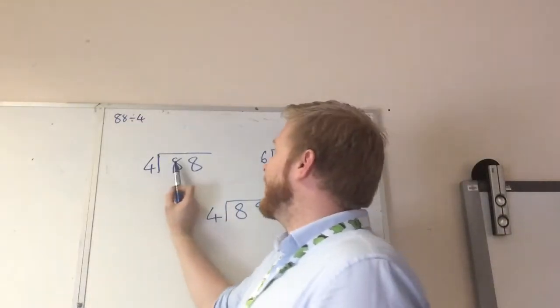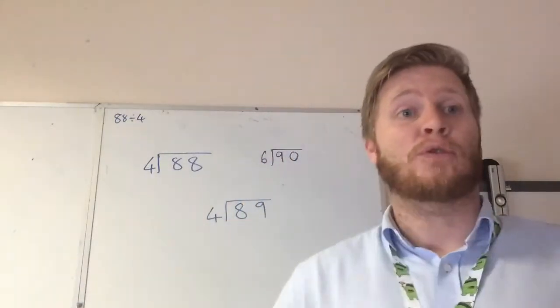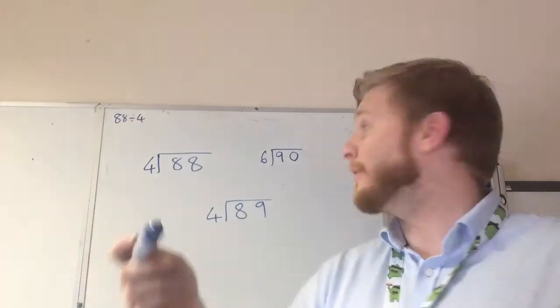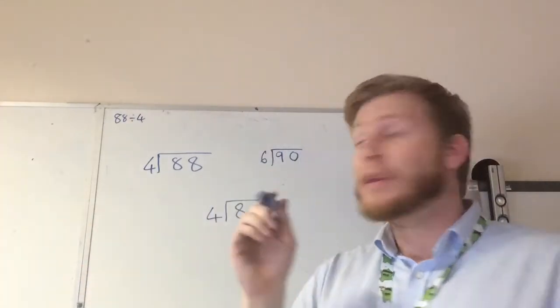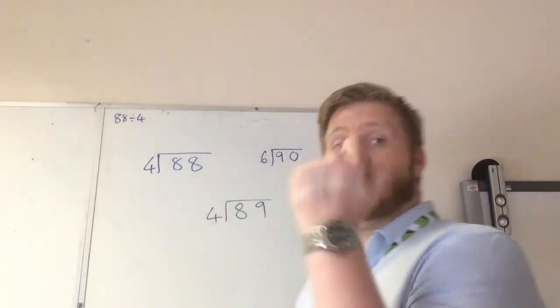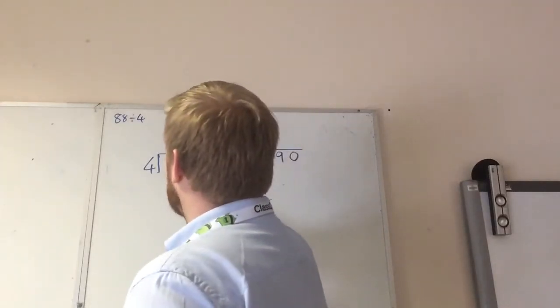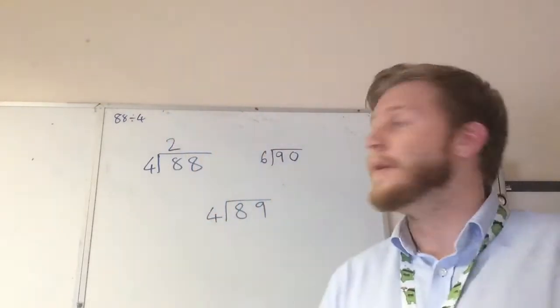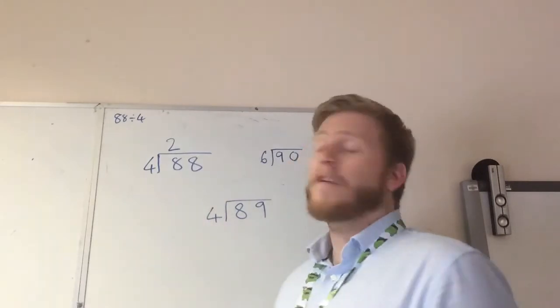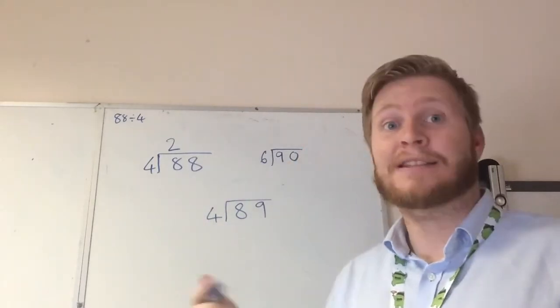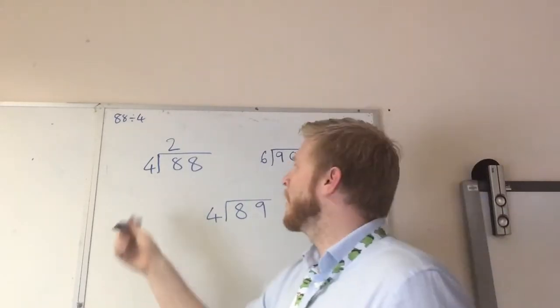First we need to see 8 divided by 4, so how many 4s are in 8? Now we know our 4 times table, so we know 2 times 4 is 8, so we know there are 2 fours in 8. So above that number, we write 2, because we know there's 2 in there. We've done that number, and we move on to our next one. Luckily, it's the same one.